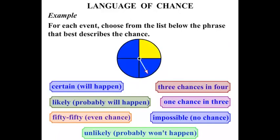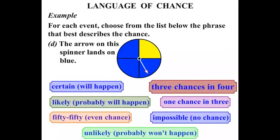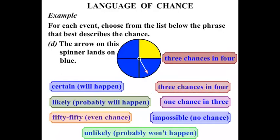Now another spinner. This time broken up into quarters. Three of them are blue, one is yellow. So the chance that the arrow on this spinner lands on blue? Well it has three chances in four, three quarters of a chance.